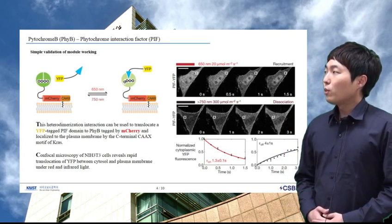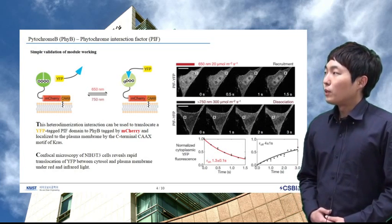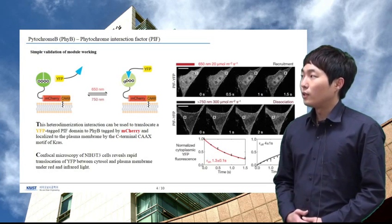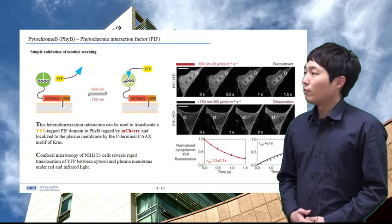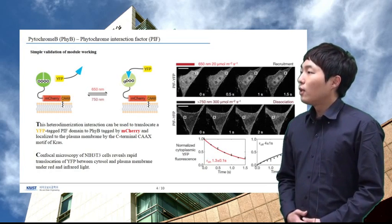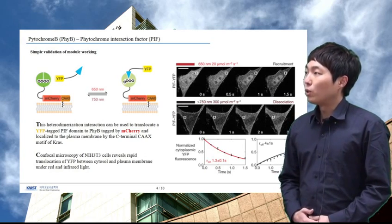Confocal microscopy imaging reveals that cytosolic PIF-YFP translocates to plasma membrane under red light illumination and translocates from the membrane to cytosol under infrared light illumination. They measured kinetics of the phytochrome-induced cytoplasmic depletion of PIF-YFP, yielding translocation time constants of 1.5 seconds for membrane recruitment and 4 seconds for membrane release. These rates are very near the physical limits for whole cell diffusion.